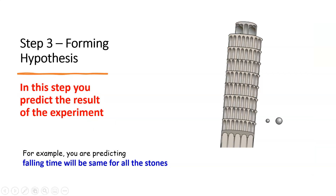The next is step three: forming a hypothesis. In this step, you predict the result of the experiment before conducting it. For example, we could predict the falling time will be the same for all stones irrespective of their masses, or predict that higher mass objects will take less time to reach the ground. You make predictions based on the information you have collected.